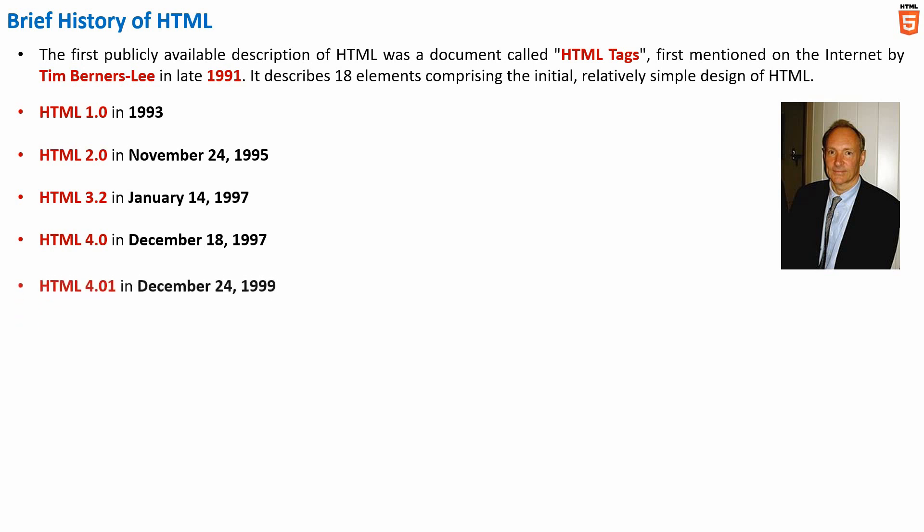Then on December 24, 1999, HTML 4.01 was published as the W3C recommendation. It also offered the same three variations as were offered in HTML 4.0.